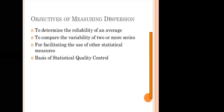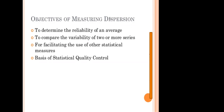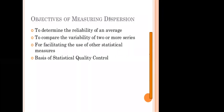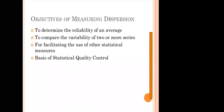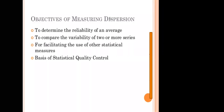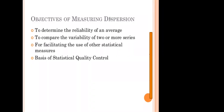Third objective: to facilitate the use of other statistical measures. The measure of dispersion serves as the basis for other statistical measures such as correlation, regression, test of hypothesis, type I and type II errors, and so on. These measures are based on the measure of variation of one kind or another. Fourth objective: it forms the basis of statistical quality control. The measure of dispersion gives an indication to management as to whether the variation in the quality of a product is due to random factors or there is some defect in the manufacturing process.